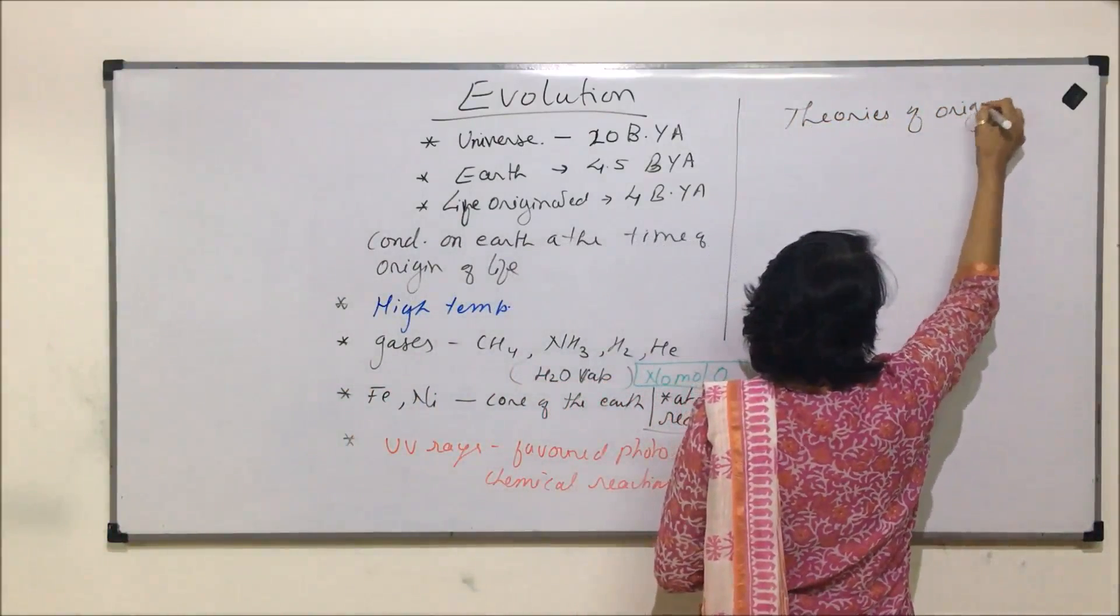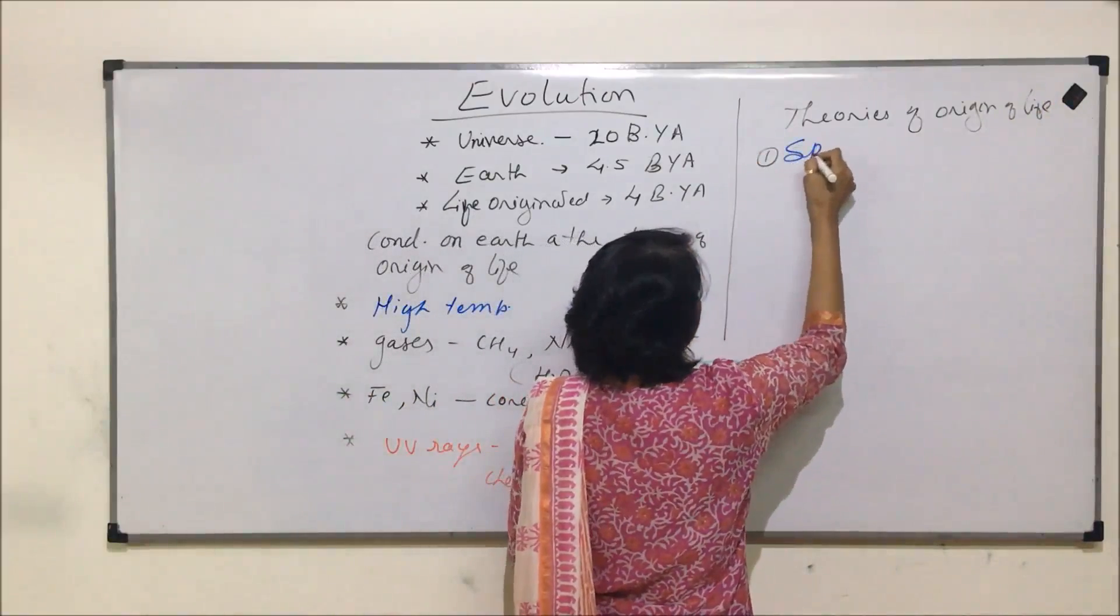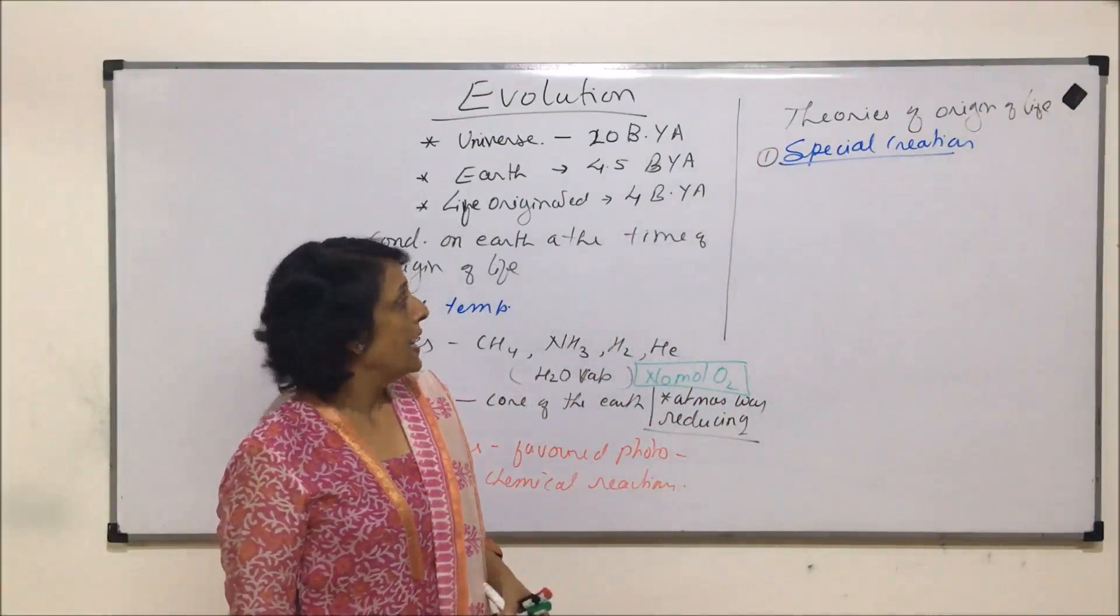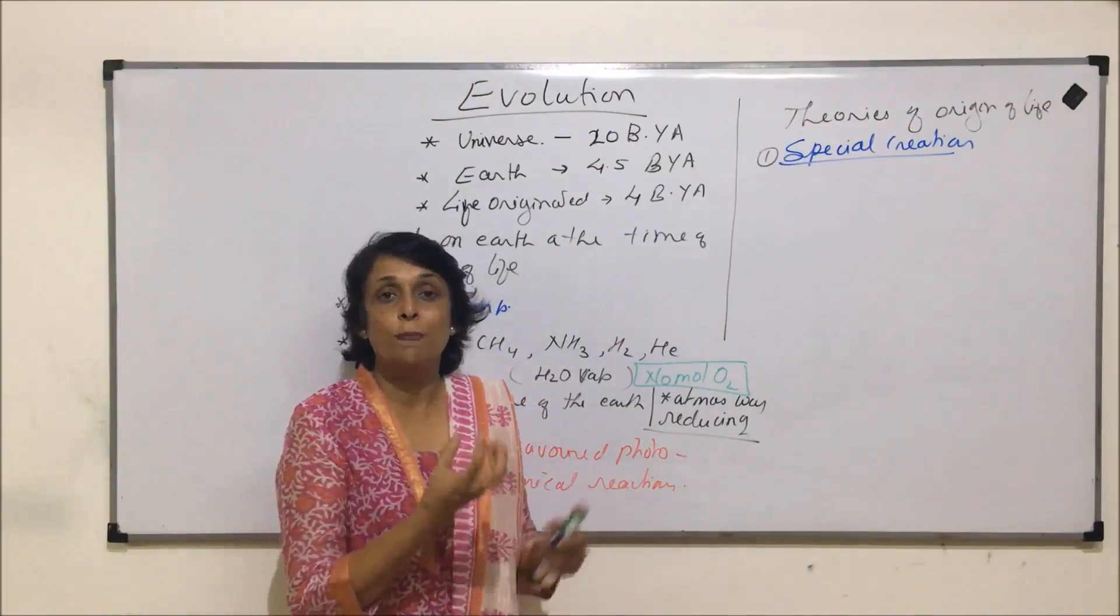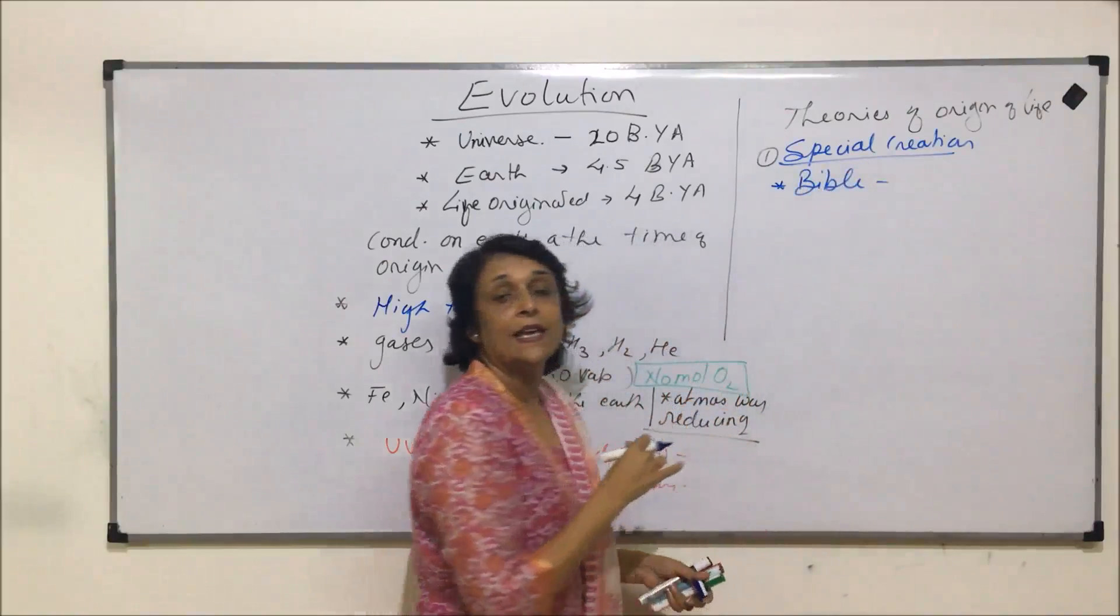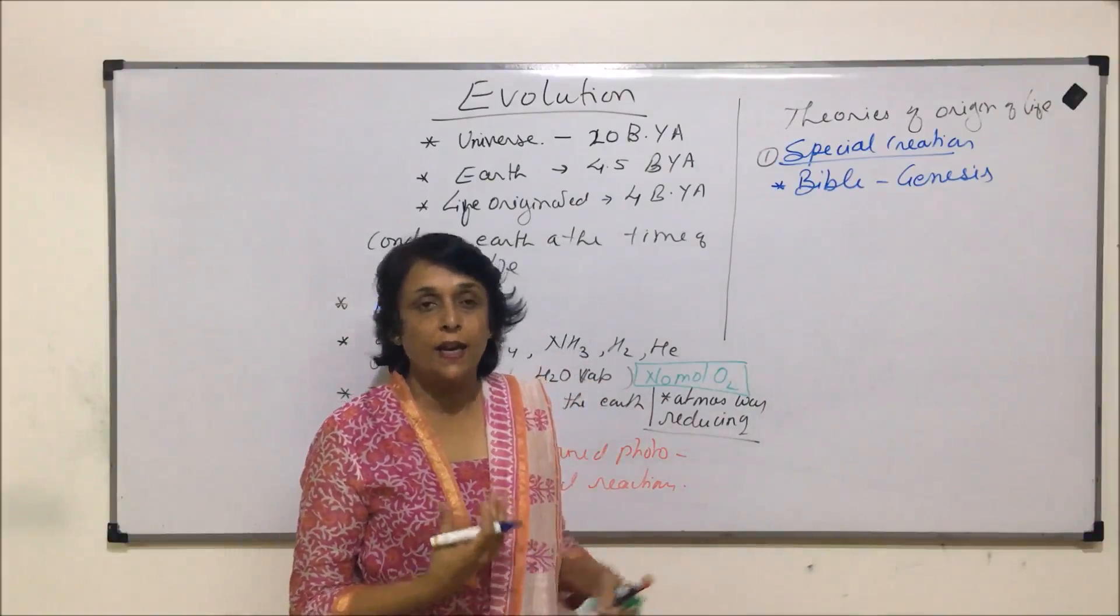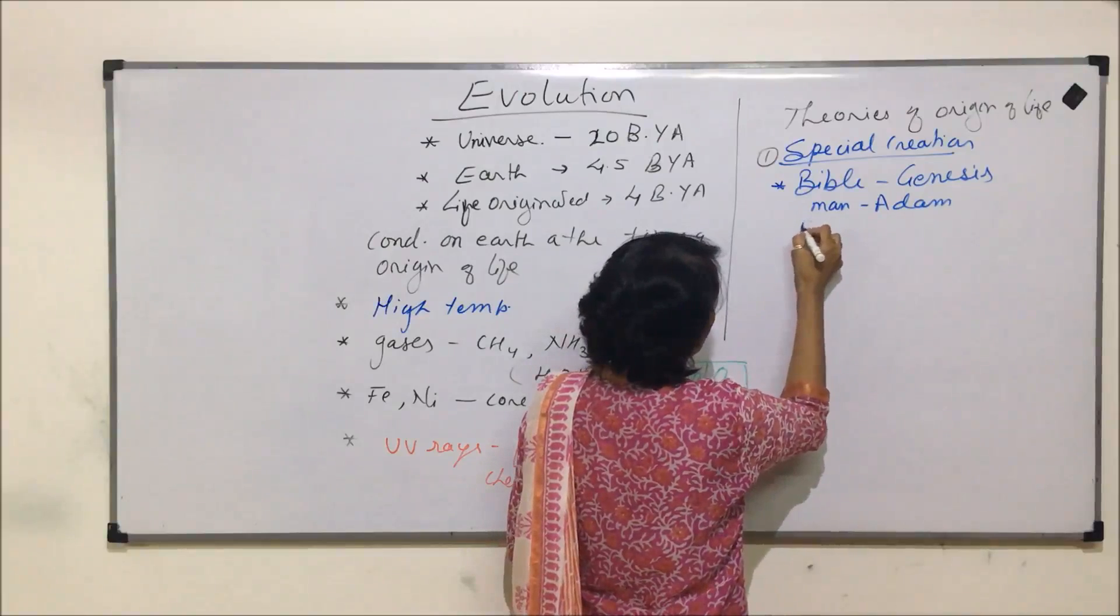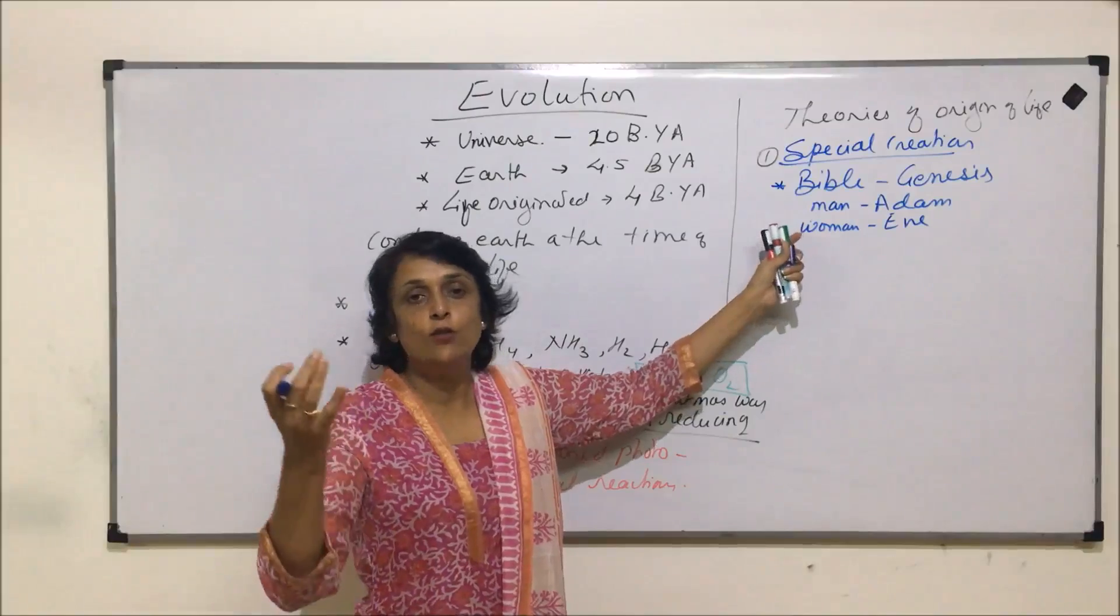The first theory is called the theory of special creation. This theory is based on religious beliefs. It was believed that life was created by God in heaven and then that created living form were placed on earth. According to Bible, in the chapter of Genesis, the first man was Adam and the first woman was Eve. So God created Adam and Eve and brought these two individuals on earth, and from there life actually evolved.